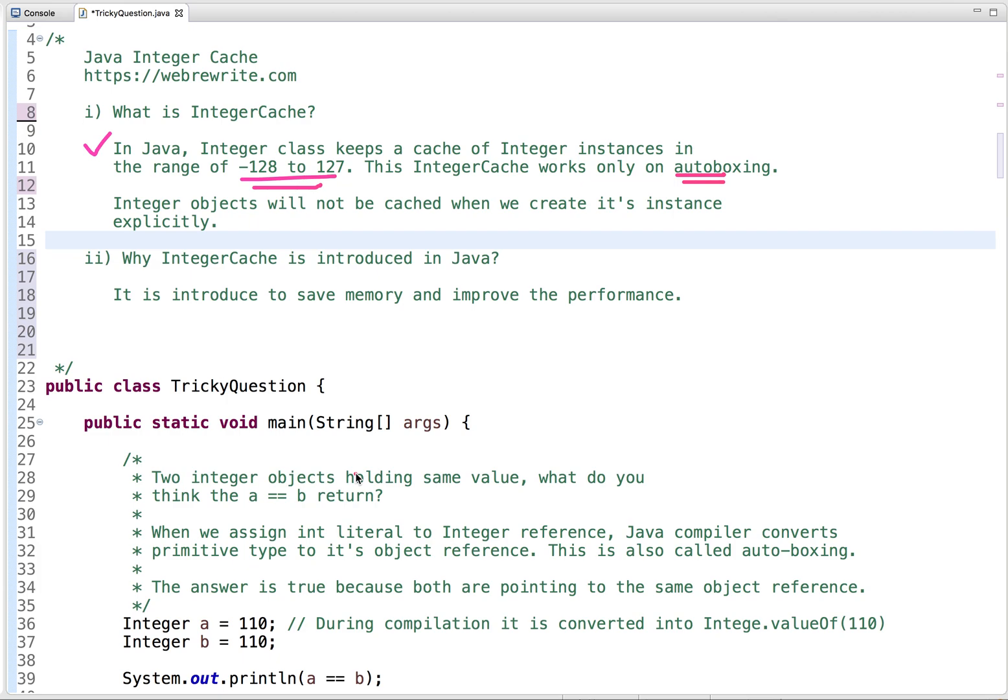So in Java, there are eight primitive types. So byte, long, short, int, float, double, char and boolean. And corresponding to these primitive types, we have the wrapper classes.